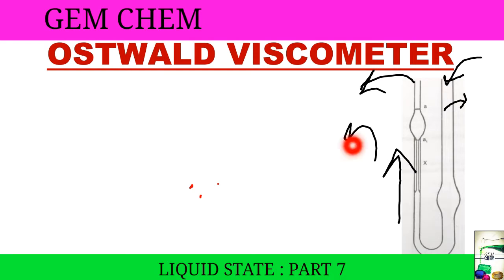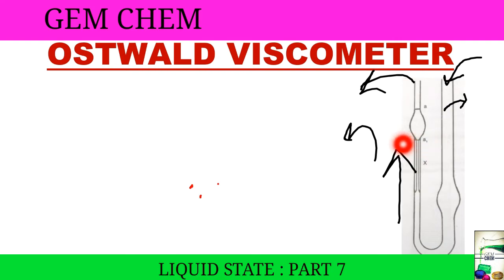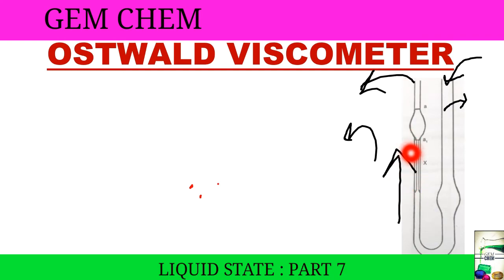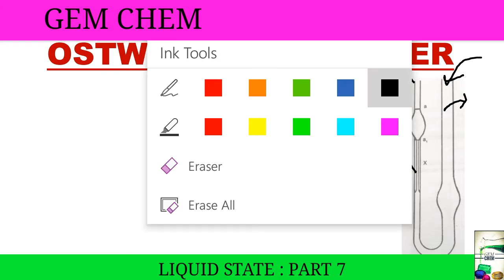We then leave the liquid — that is, we stop sucking. As the liquid reaches mark A1, the stopwatch is started and the liquid is allowed to flow. When it reaches the end of the capillary, the time measurement is taken. The time taken to cover this distance is considered to be theta 1.